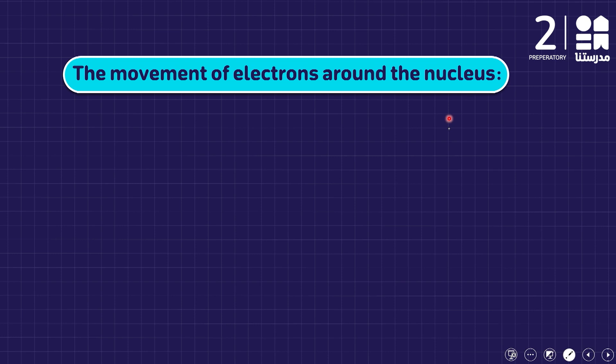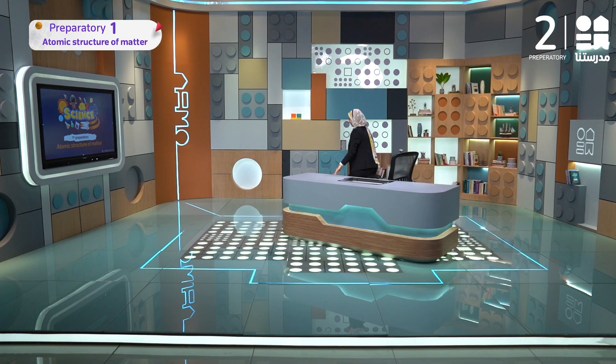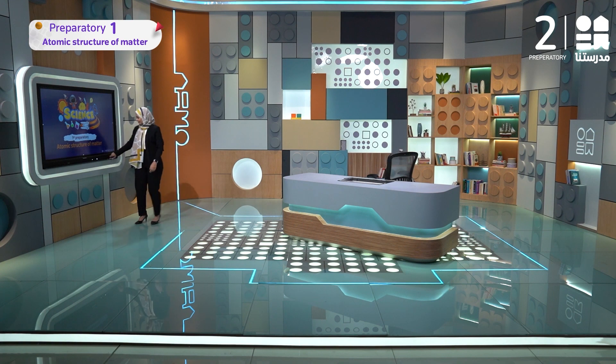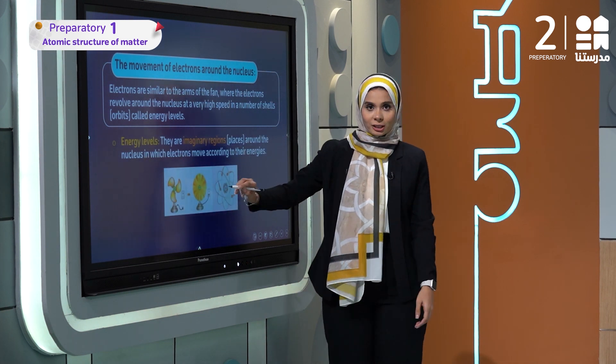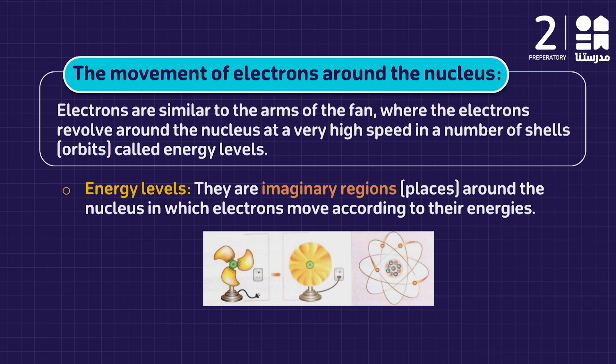We are going to talk about the movement of electrons around the nucleus. Imagine that this green part is the nucleus of the atom, and the arms of the fan are the electrons which revolve around the nucleus. Electrons are similar to arms of the fan, revolving around the nucleus at very high speed in a number of channels or orbits called energy levels.